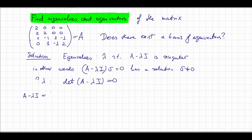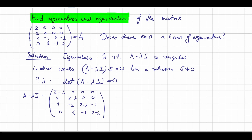The matrix A minus lambda E is obtained by subtracting lambda from the main diagonal: first row 2 minus lambda, 0, 0, 0; second row 2, 2 minus lambda, 0, 0; third row 1, minus 1, 2 minus lambda, 0; fourth row 1, minus 1, 2, minus lambda. So just subtract lambda from the main diagonal.